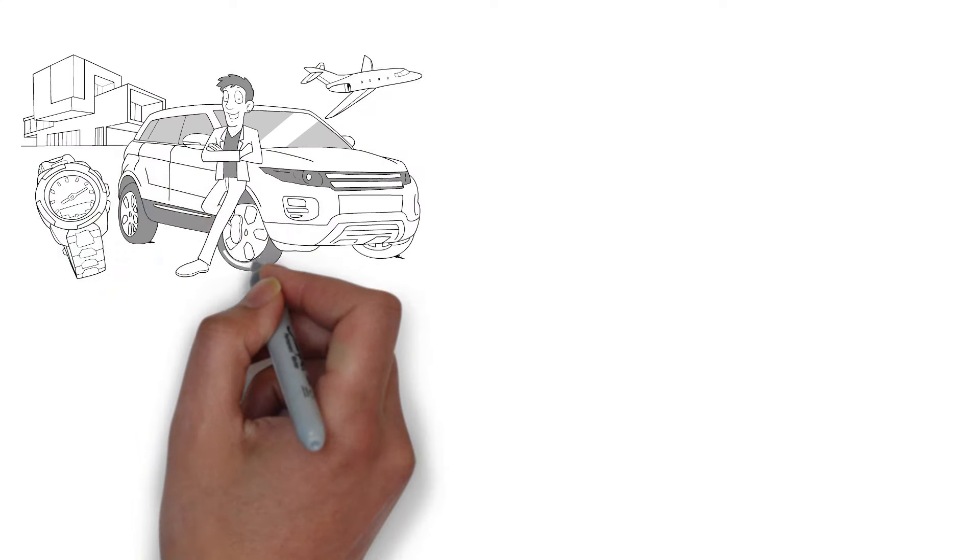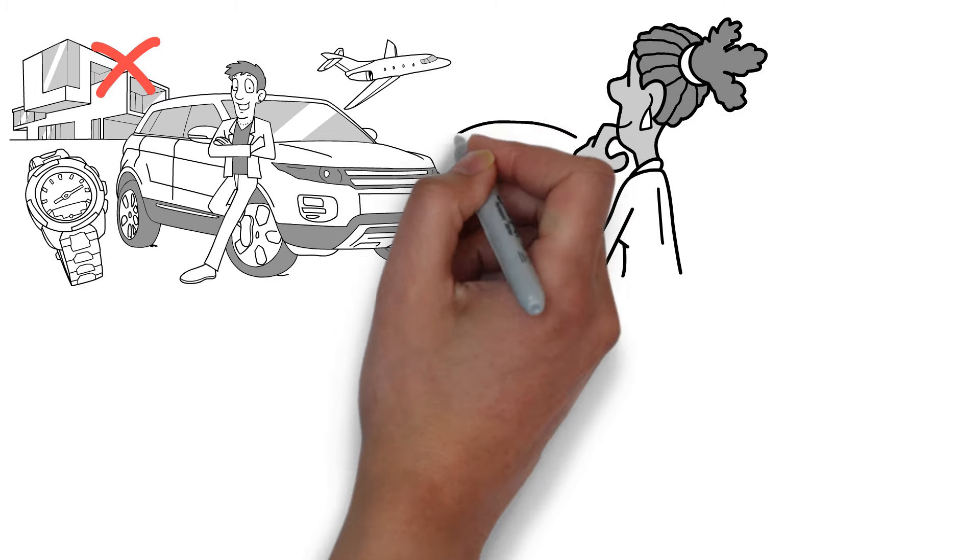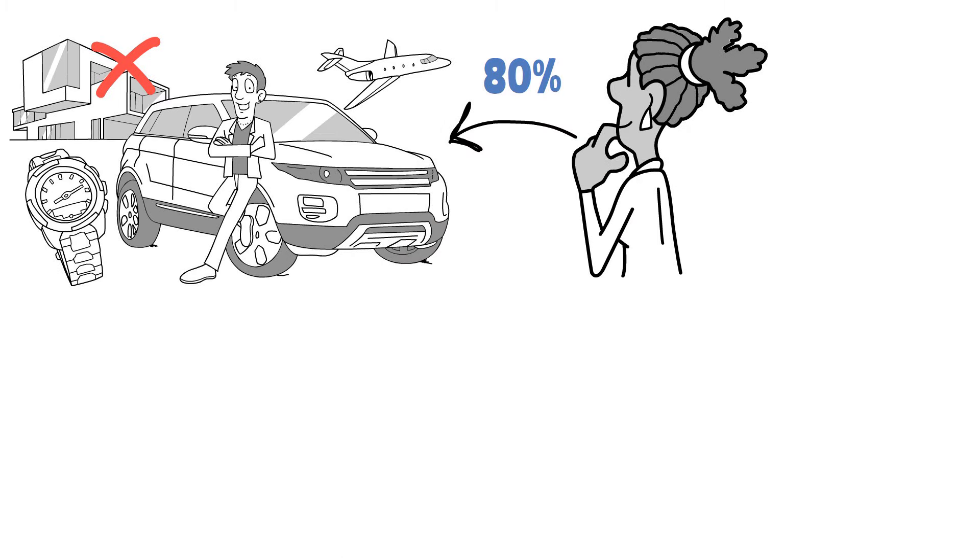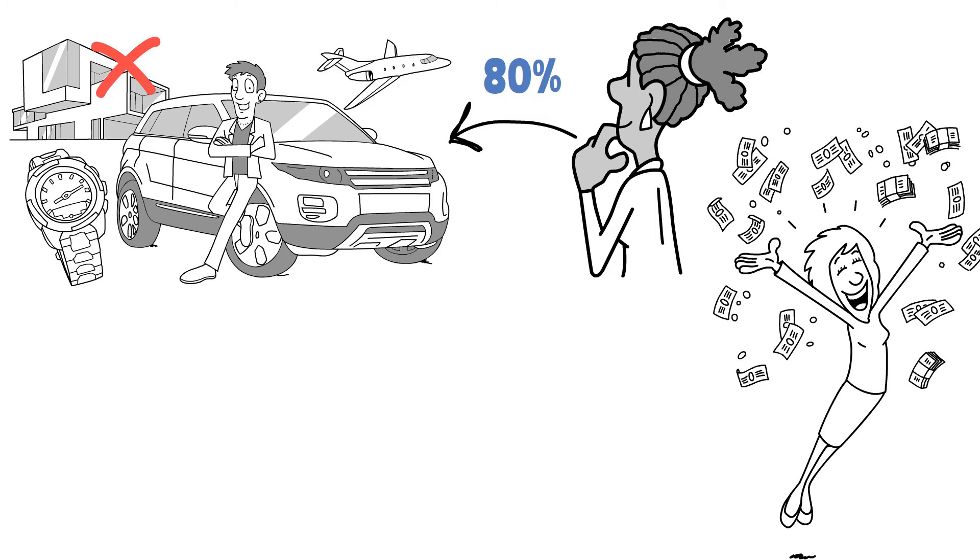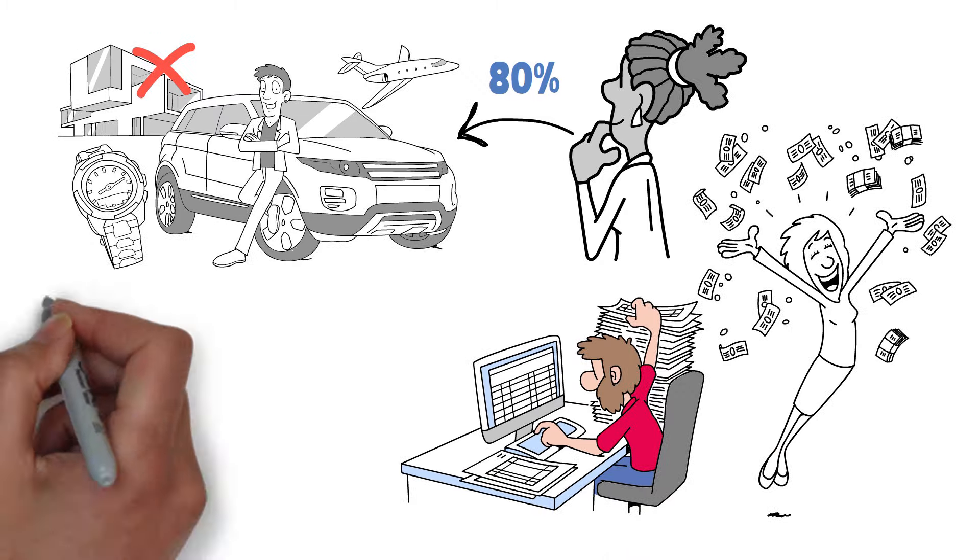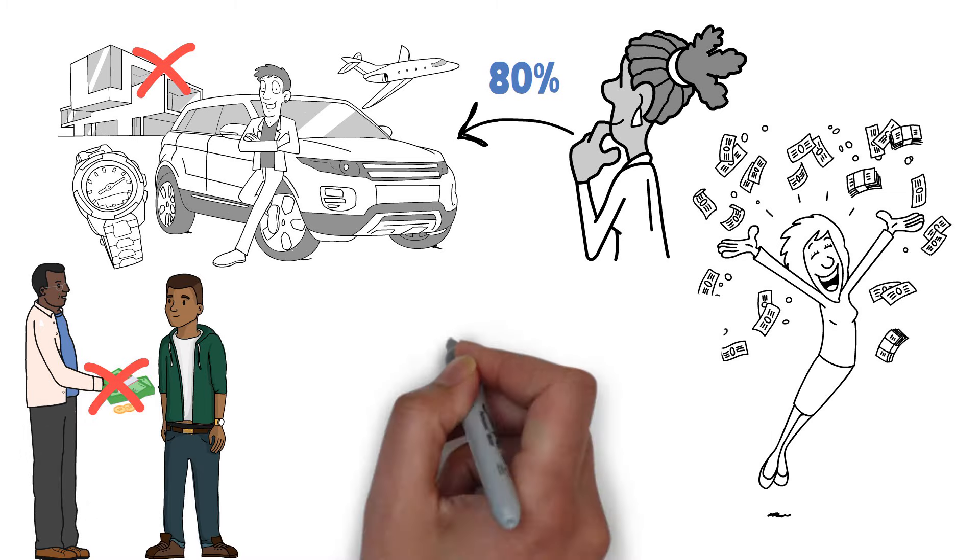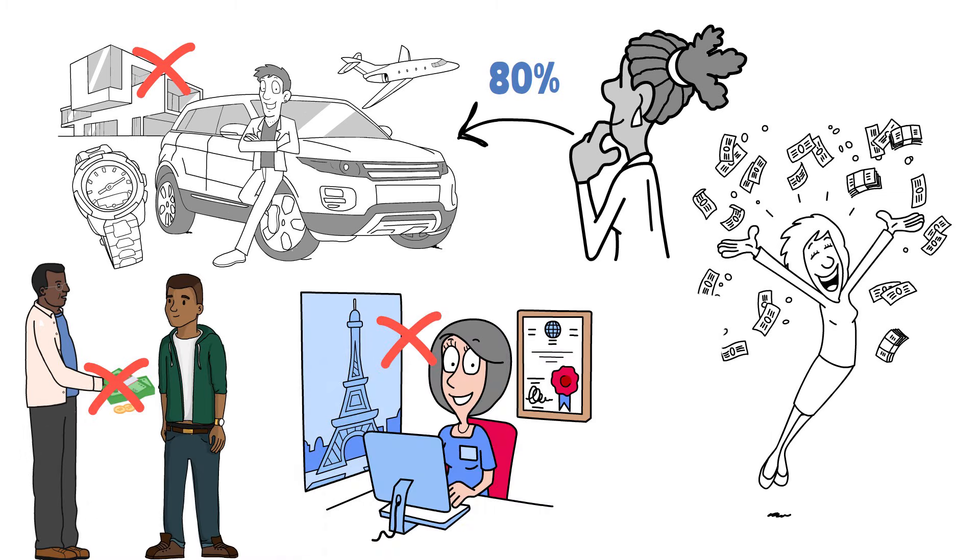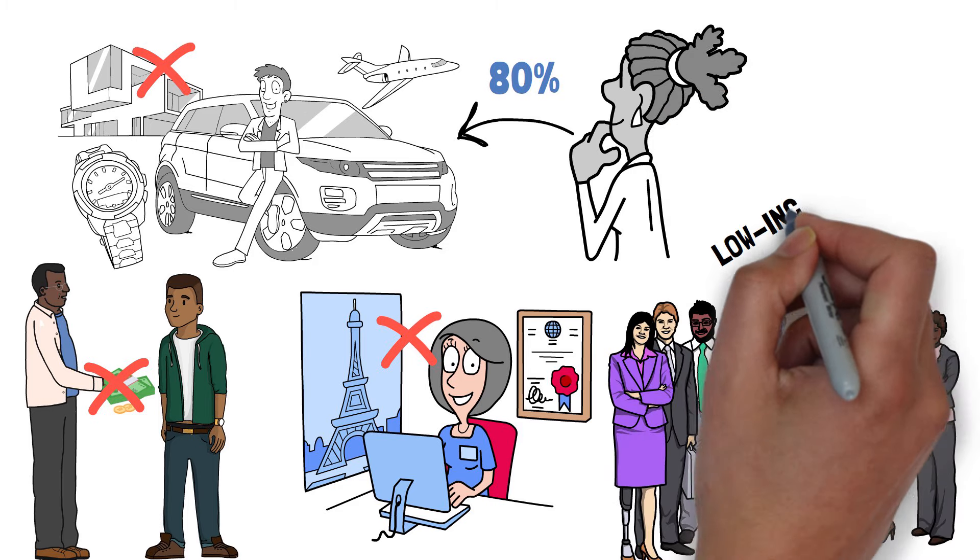Millionaires do not inherit their entire fortune. Did you realize that roughly 80% of millionaires did not inherit anything? In fact, the majority of millionaires are first-generation rich, which means they've worked hard and made wise decisions. Their parents did not lend them money to start a business, and they did not simply walk into a profitable firm. Quite the contrary, in fact. 80% of millionaires came from low-income families.